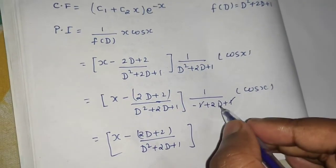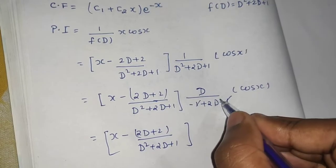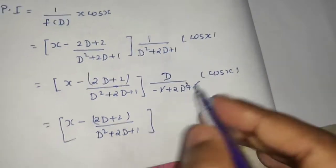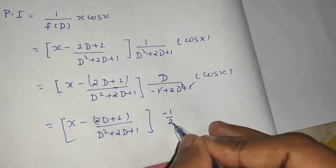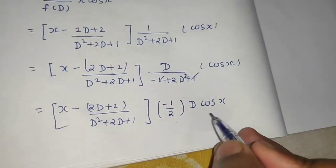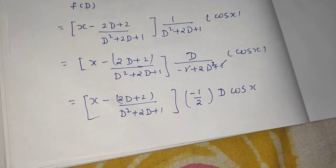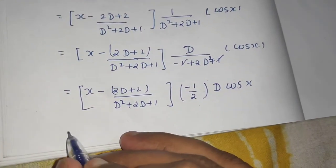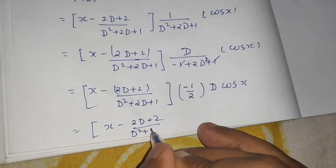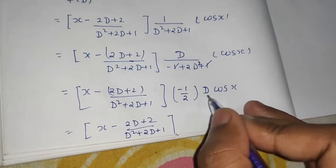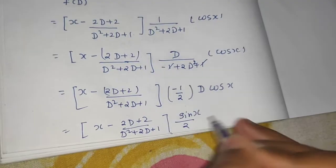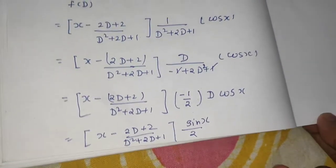Multiply and divide by 2D to get 2D² in the denominator. Replacing D² by −1 gives −2 in the denominator, written as −1/2, leaving us with d(cos x). Since d/dx(cos x) = −sin x, the expression becomes: x minus (2D + 2)/(D² + 2D + 1) times sin x/2. Multiplying through gives x·sin x/2 as the first term.